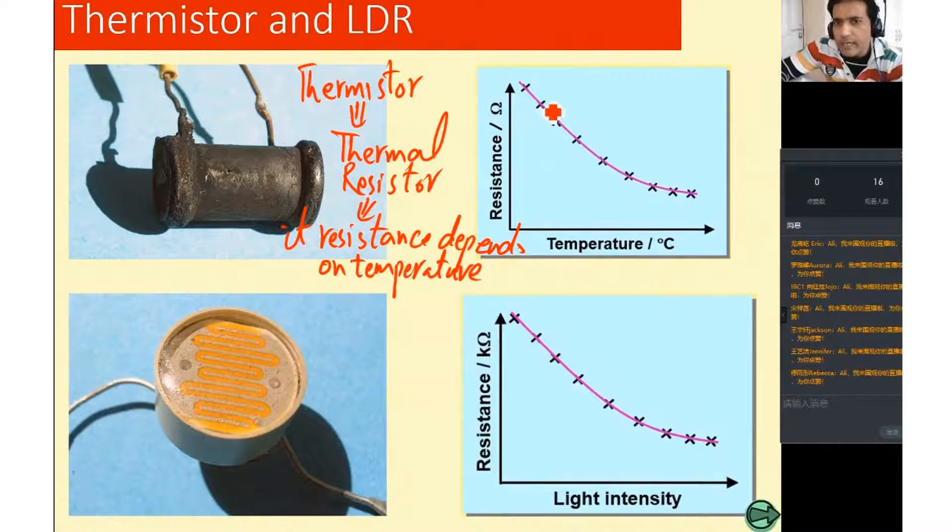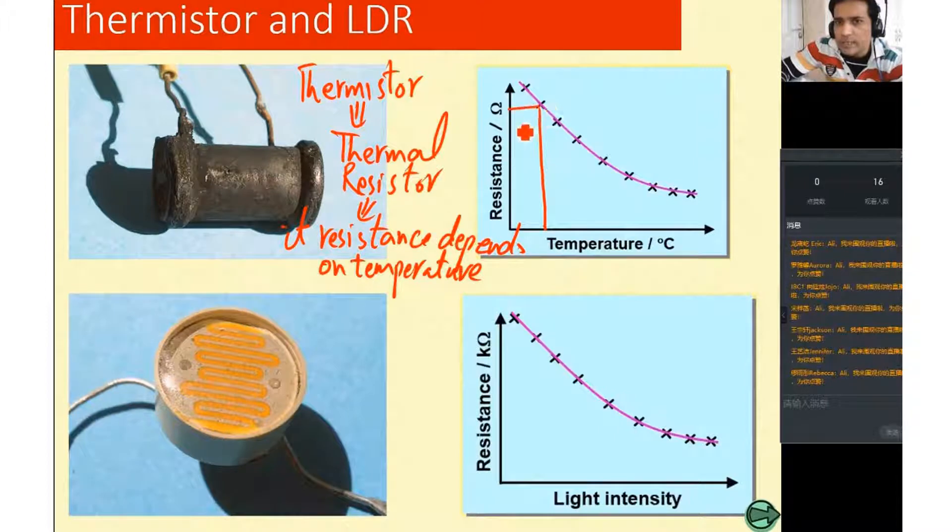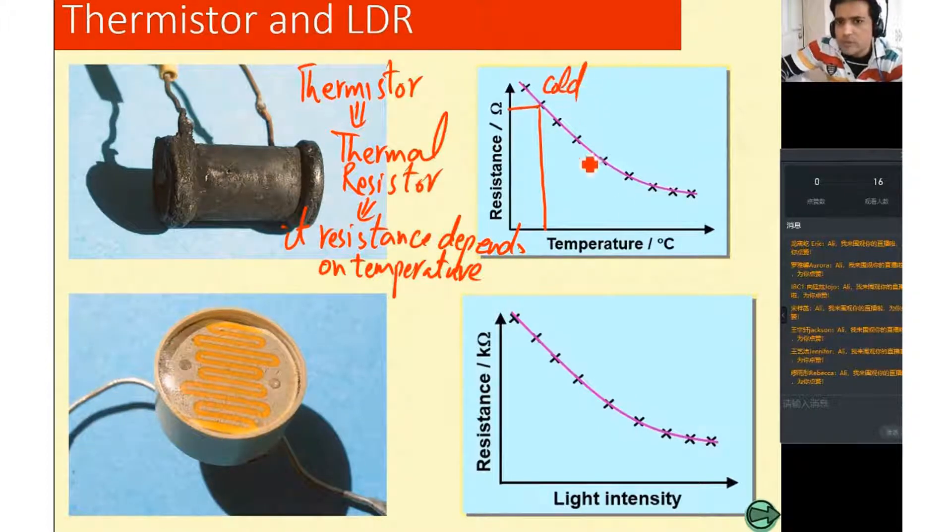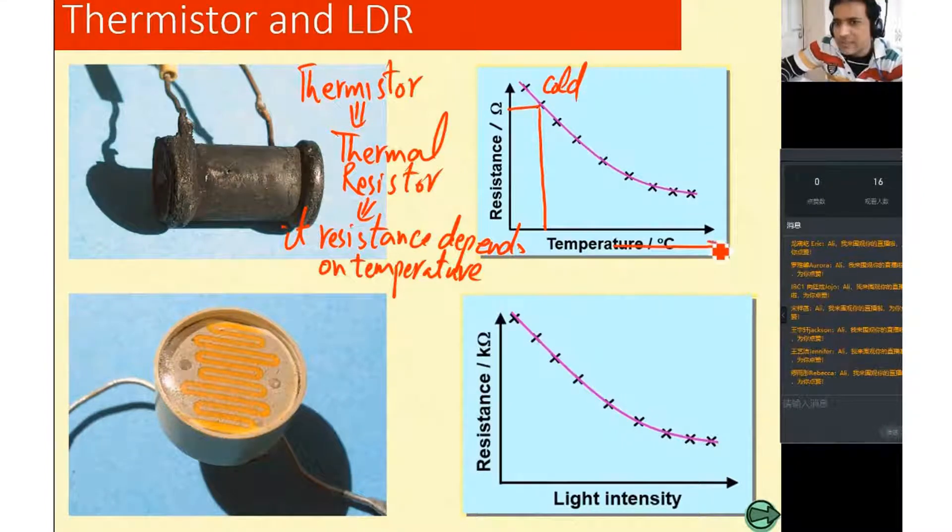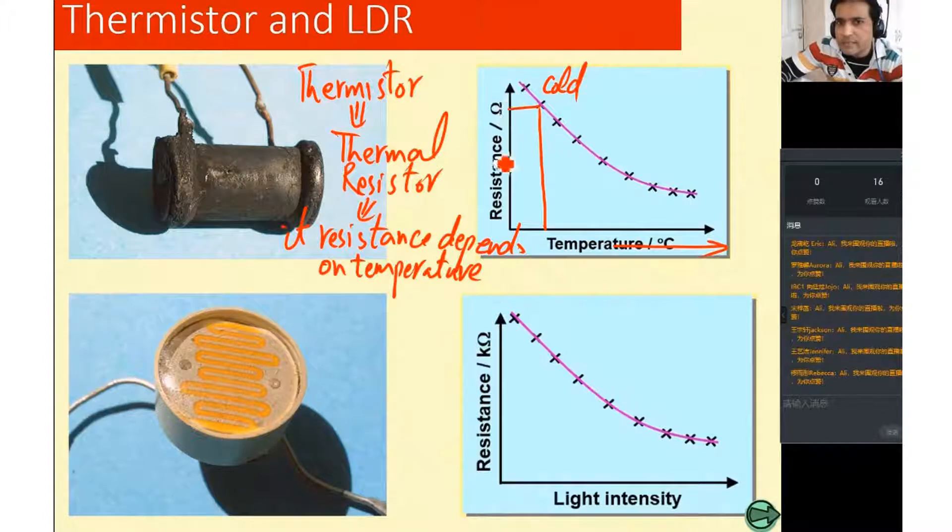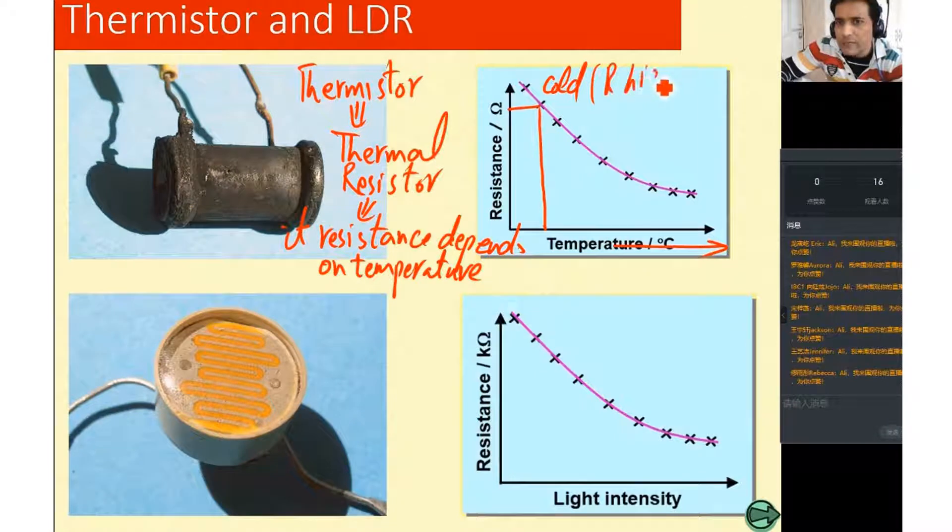Now you can see here at this point temperature is low. If you see here and you draw a line, at this point it is cold, means the temperature is low. Temperature is increasing this way. So when it is cold, you see the y-axis is resistance. So when it is cold, resistance is high.